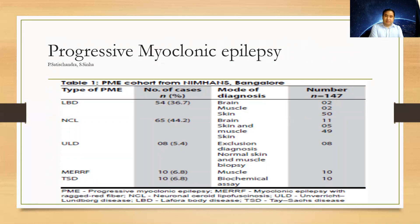A study from South India by Satish Chandra et al. examined the causes of progressive myoclonic epilepsy, highlighting Lafora body disease and NCL as important causes. However, from overall data, ULD is the most common form of PME, followed by Lafora body disease.